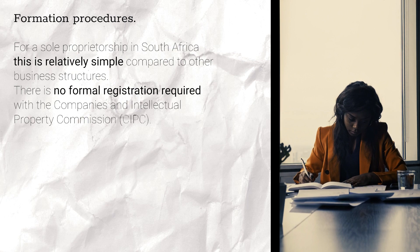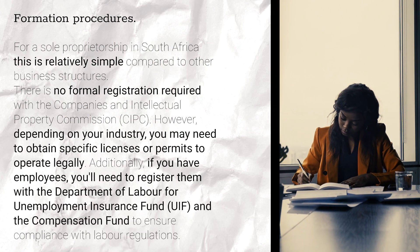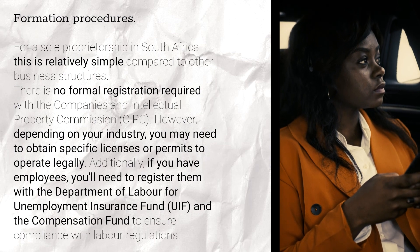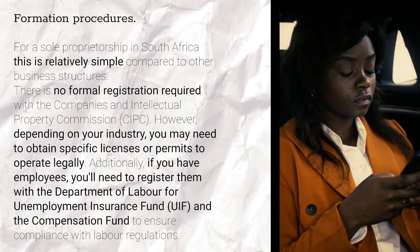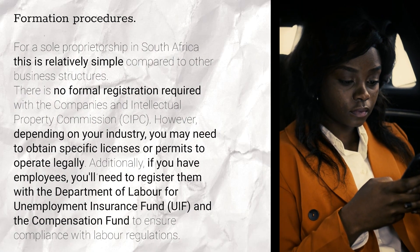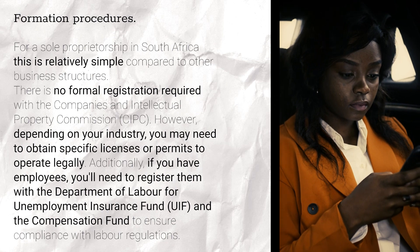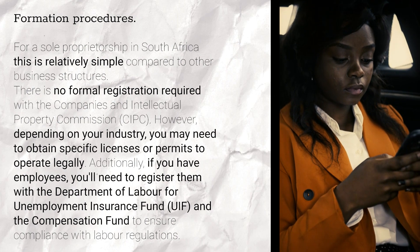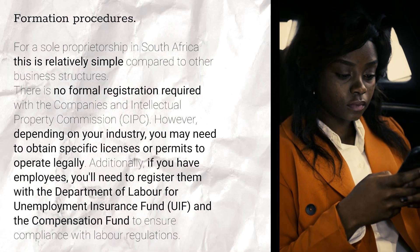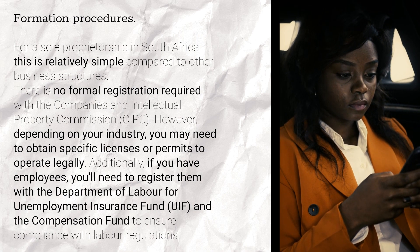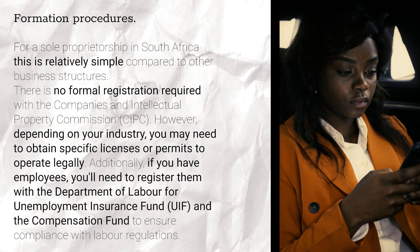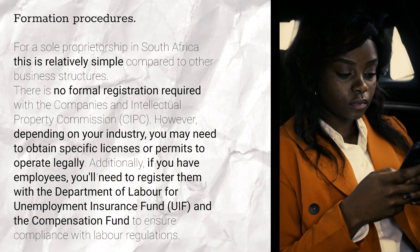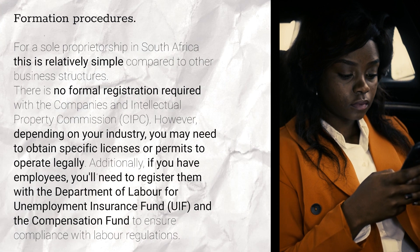When it comes to formation procedures, there's no formal registration required with the Companies and Intellectual Property Commission, CIPC, for a sole proprietorship. However, depending on your industry, you might need specific licenses or permits to operate legally. If you have employees, you'll also need to register them with the Department of Labor for the Unemployment Insurance Fund and the Compensation Fund.